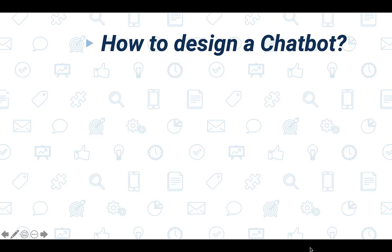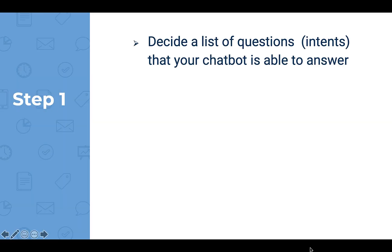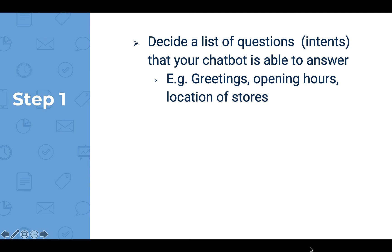So, if you want to design a chatbot, how do you do it? Basically, there are five steps. Step 1: Design a list of questions which are the intents that your chatbot is able to answer. For example, greetings, opening hours, location of stores.